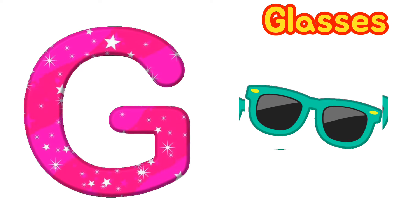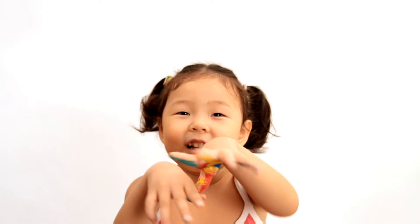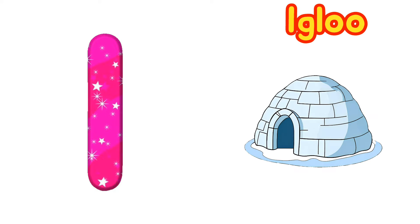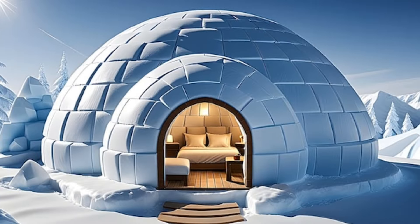G is for Glasses. G-G-Glasses. H is for Hand. H-H-Hand. I is for Igloo. I-I-Igloo. I-Igloo.